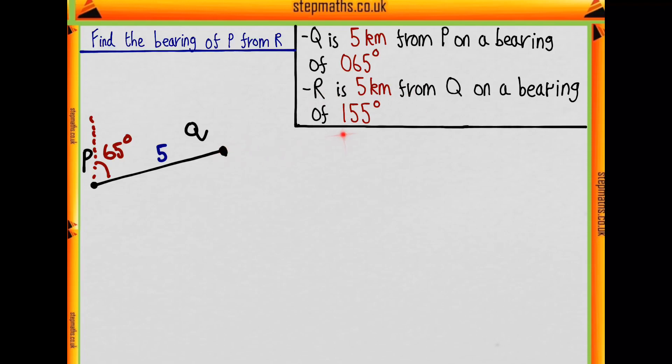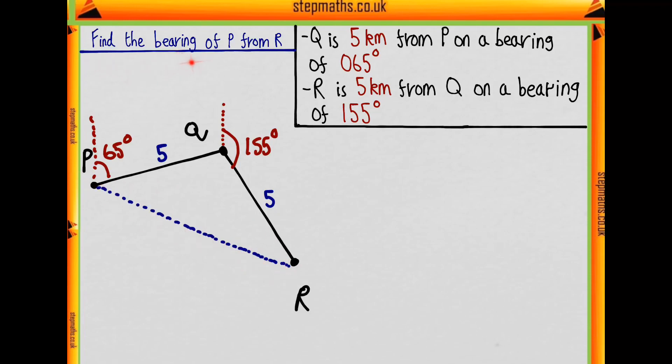Then similarly, R is five kilometers from Q, so our north arrow goes on Q on a bearing of 155 which will be roughly down here. And once again that's five kilometers. What are we asked to find? We're asked to find the bearing of P from R. Our angle is relative to R, and so this is the angle we need to find. Let's call that theta.